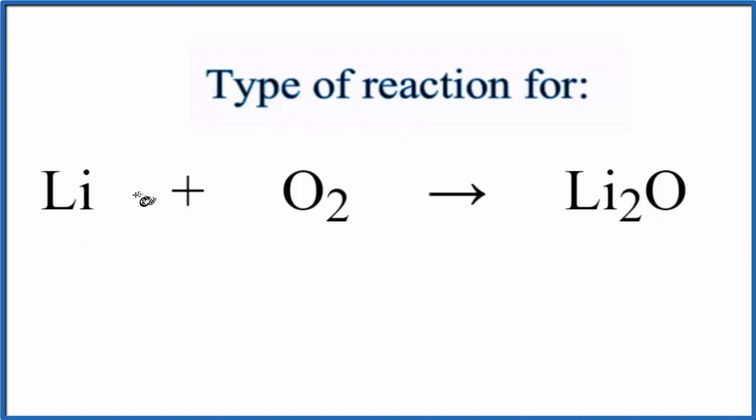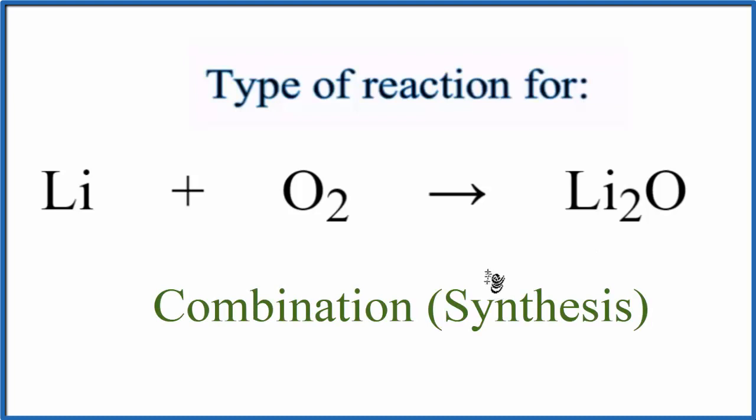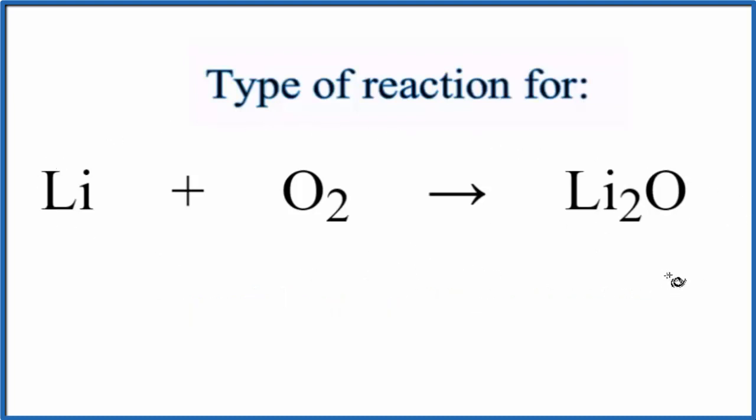When we look at the equation we can see that we have two separate substances coming together to form one new substance. When we have these two things combined to form a new substance, it's called combination. They also call it a synthesis reaction as well. So this is a combination reaction.